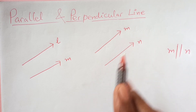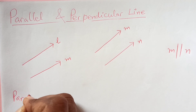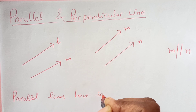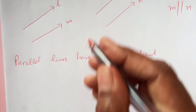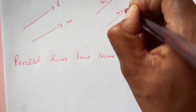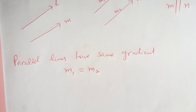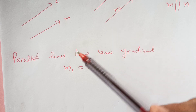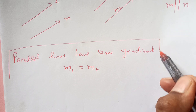When the lines are parallel, then the gradient is equal. We can say that parallel lines have the same gradient. So if the gradient of one line is M1 and the other line is M2, then we will say M1 is equal to M2, meaning if the lines are parallel, their gradient will be the same, or if the gradient is the same, then the lines are parallel.